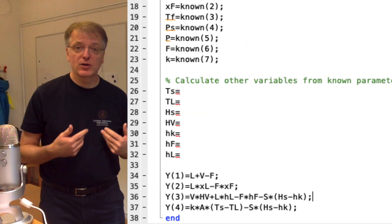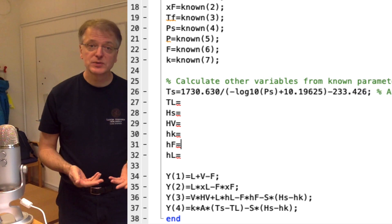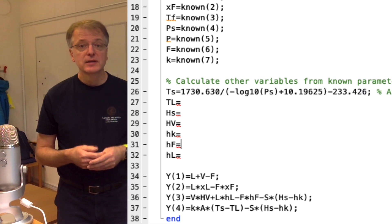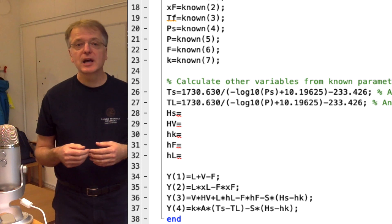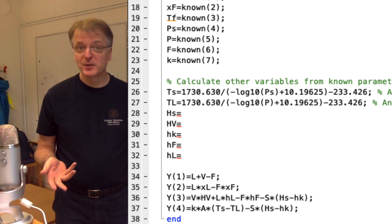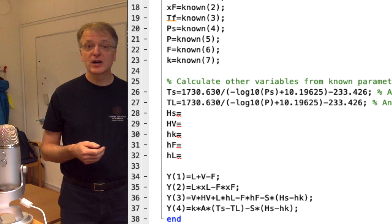The temperature of the steam can be calculated from the pressure of the steam using Antoine's equation. Similarly, the temperature TL of the liquid L and the vapor V can also be calculated from the pressure in the condenser using Antoine's equation.